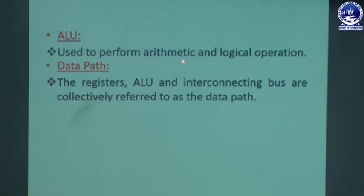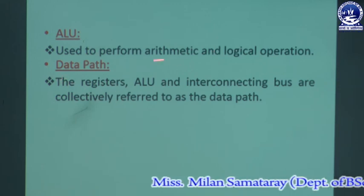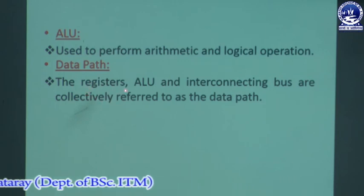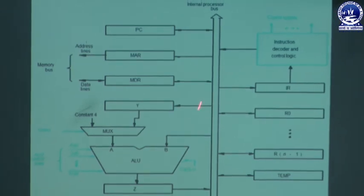The ALU is used to perform arithmetic and logic operations. The data path — consisting of the registers, ALU, and interconnecting buses — is collectively referred to as the data path. It is the way data is transferred between different components of the processor: special and general purpose registers, ALU, control unit, and the interconnecting processor bus. All these connections are collectively called the data path, and this is the description of the single bus organization concept.